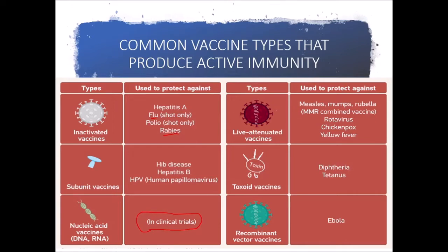Live attenuated vaccines are like measles, mumps, and rubella — this would be like our distemper vaccine. These are things that we would use to protect against diseases that aren't deadly if you were to get it. Toxoid vaccines use a portion of a bacterial toxin, and tetanus would be a good example of that.